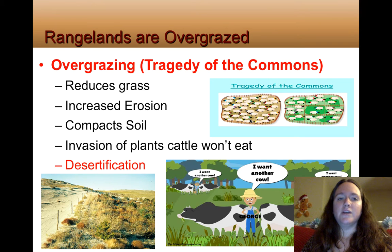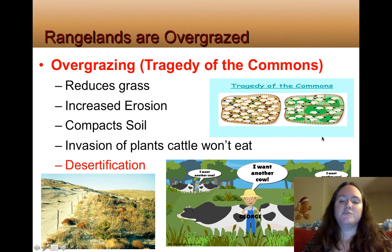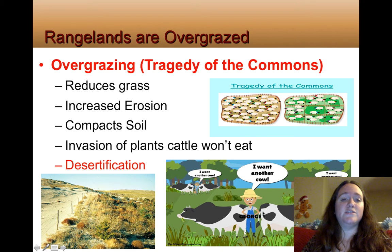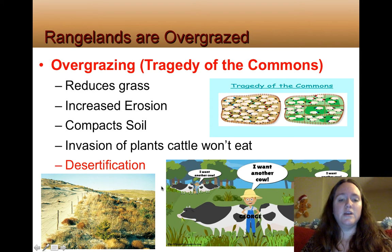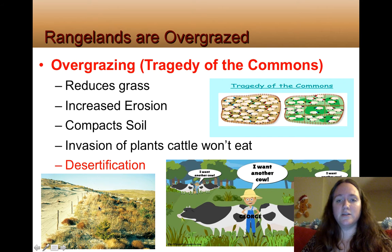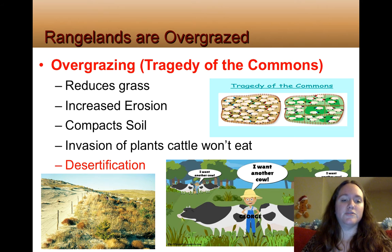Looking at rangelands: the biggest problem is overgrazing. If you remember the Tragedy of the Commons, a farmer thinks: I want to put down another cow, because if I don't let my cows graze, another farmer will. Overgrazing causes grasses to be reduced and erosion to increase. The soil compacts because cattle press all over it. Plants that cattle won't eat take over, and eventually it leads to desertification — basically becoming more of a desert.